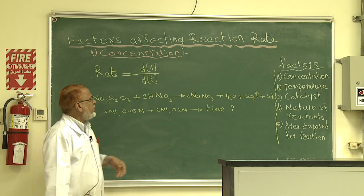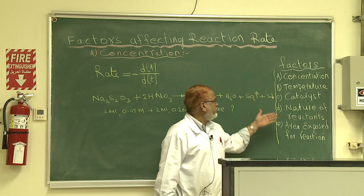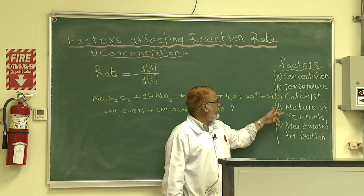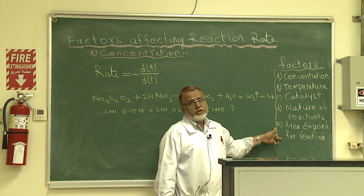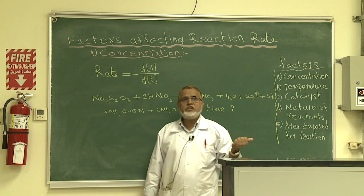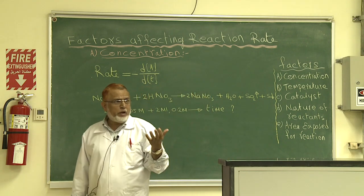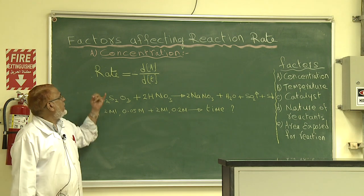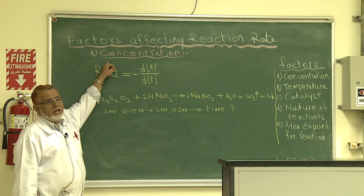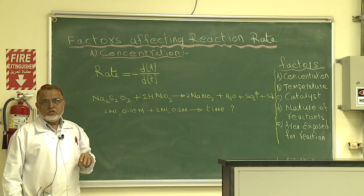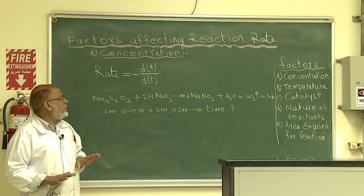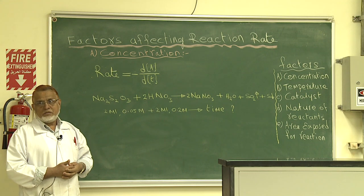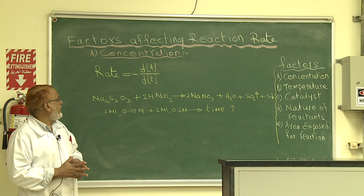There are many factors affecting rate: concentration, temperature, catalyst, nature of the reactants, and area exposed for the reaction. In this course we have two experiments — one directly related to concentration and another to temperature. Today I explain how changing the concentration changes the rate of the reaction.